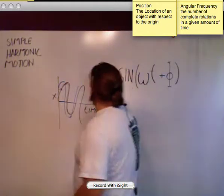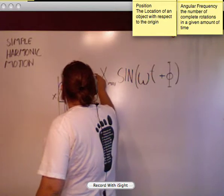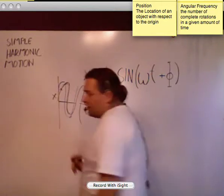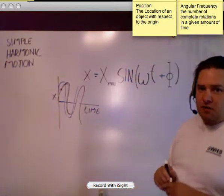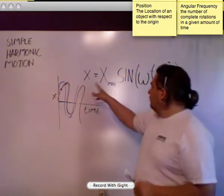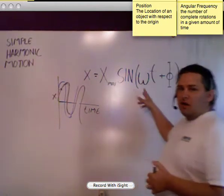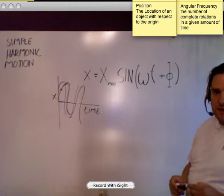Now, this is all equal to position. That's the first equation for simple harmonic motion. X is equal to X max times sine omega t plus a phase shift. Okay?